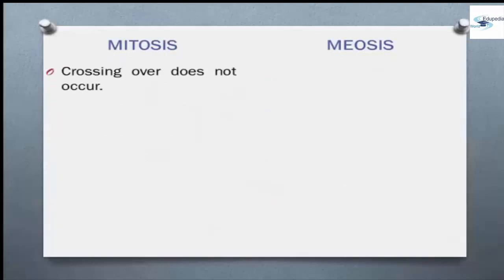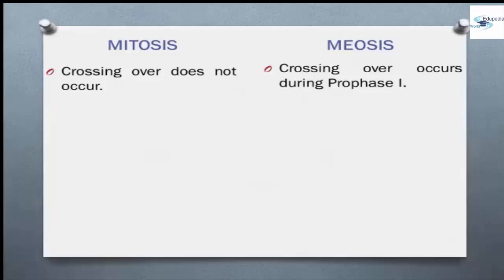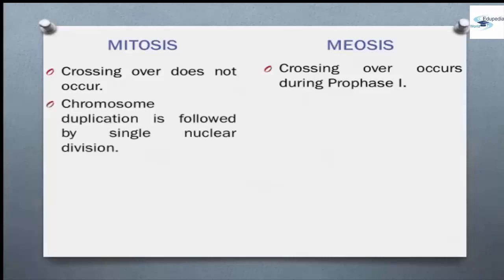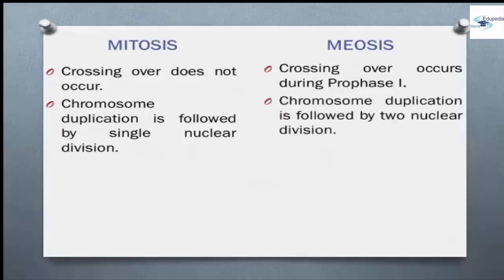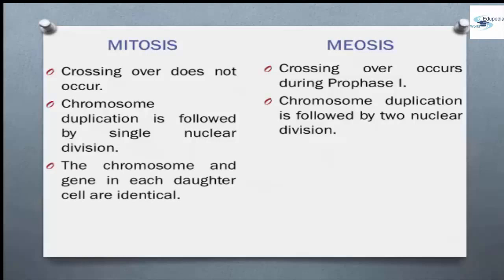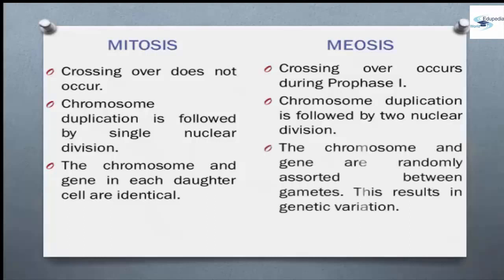Crossing over does not occur in mitosis, but crossing over occurs in meiosis during prophase 1. Chromosome duplication is followed by a single nuclear division in case of mitosis, but in meiosis chromosome duplication is followed by two nuclear divisions. In case of mitosis, the chromosomes and genes in each daughter cell are identical, but in meiosis chromosomes and genes are randomly assorted between gametes. This results in genetic variation.